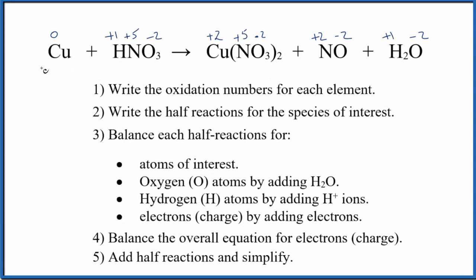Let's balance the redox reaction for Cu plus HNO₃. We end up with Cu(NO₃)₂, NO, and H₂O. We're going to use the ion-electron method, also called the half-reaction method, to balance this. First, we write the oxidation numbers. I've already done that. If you need help, there's a link in the description.